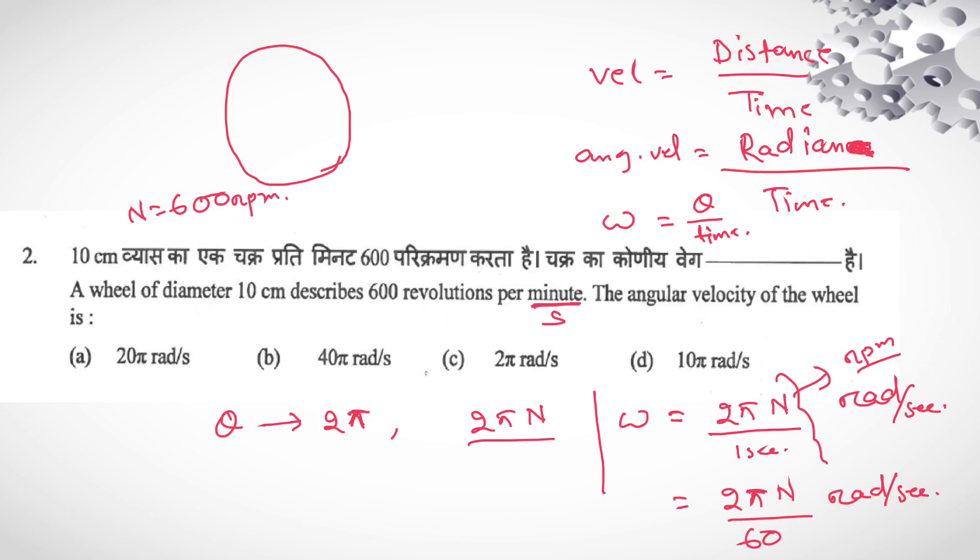Omega equal to 2π radian moving in one complete revolution. So n complete revolution, n is 600 divided by 60. Here you will get 20π radian per second. From option, A is your correct answer.